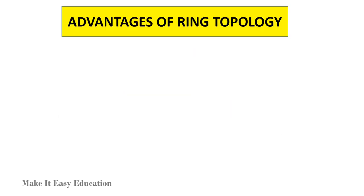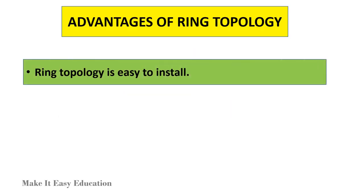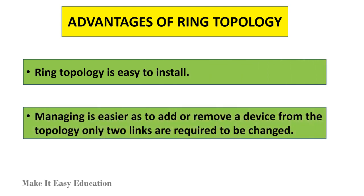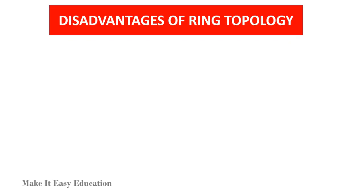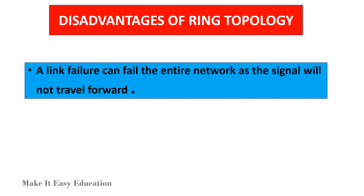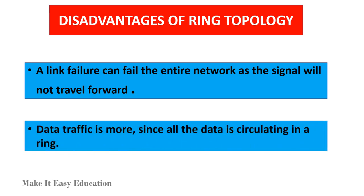Advantages of ring topology: Ring topology is easy to install. Managing is easier, as to add or remove a device from the topology, only two links are required to be changed. Disadvantages of ring topology: A link failure can fail the entire network, as the signal will not travel forward. Data traffic is more, since all the data is circulating in a ring.